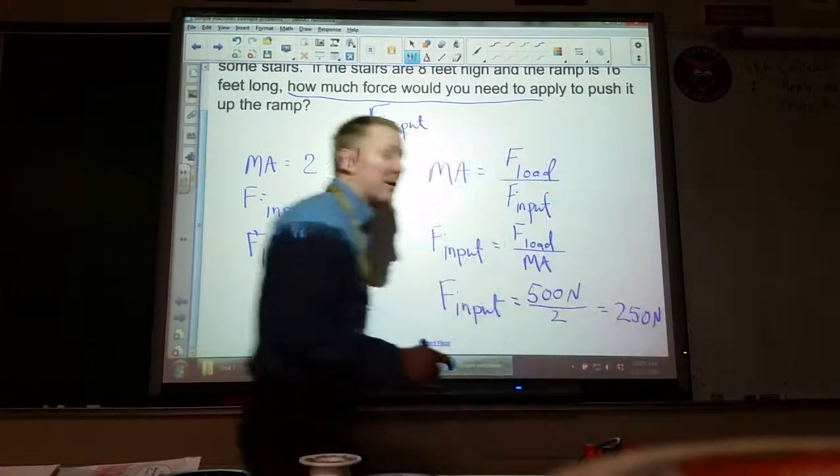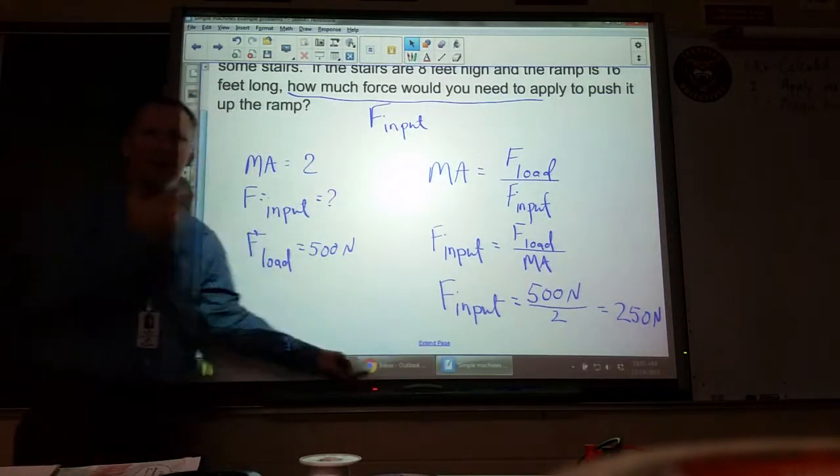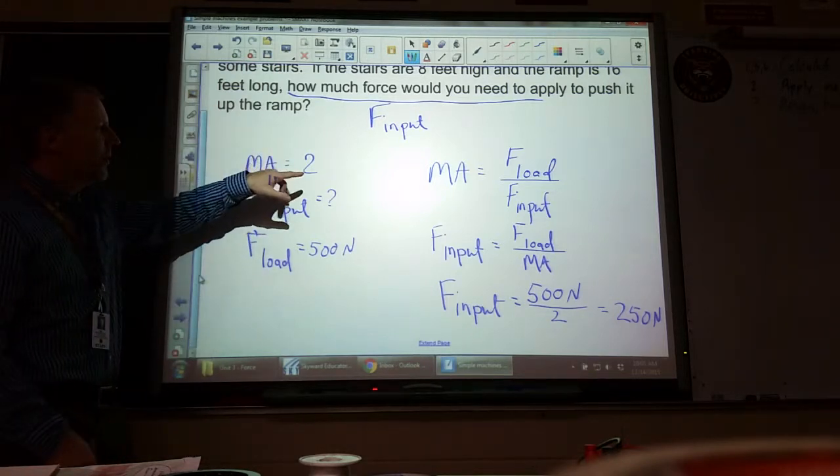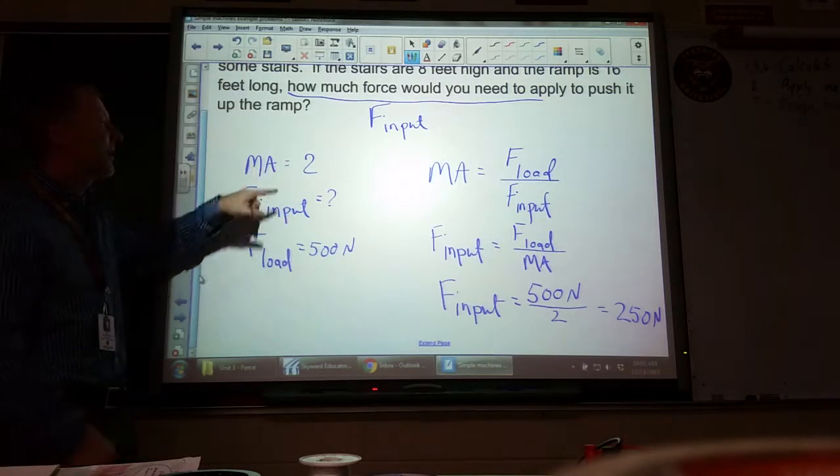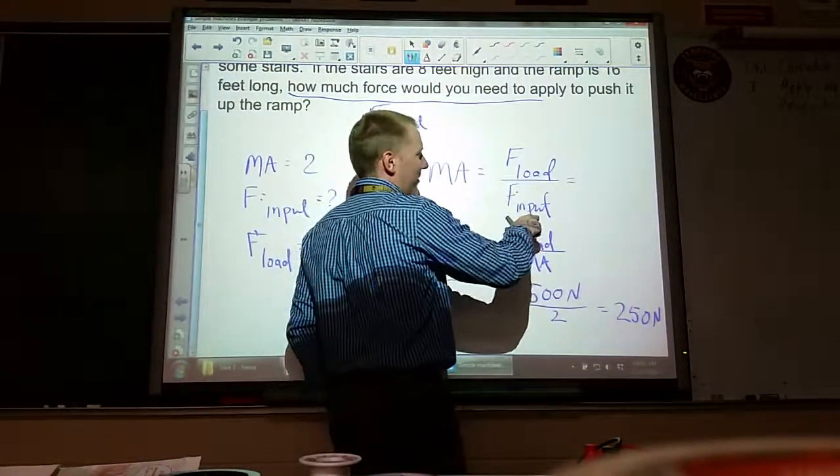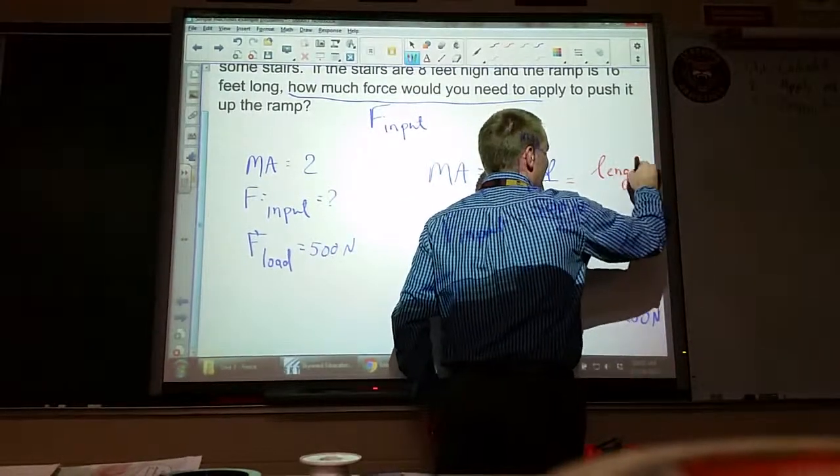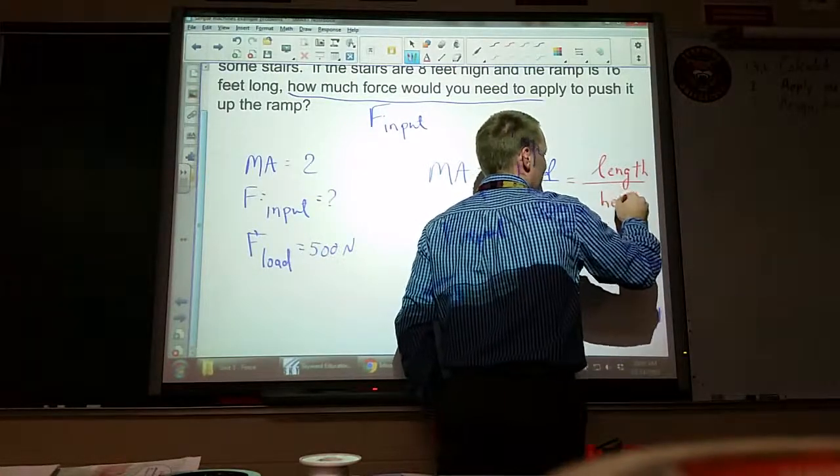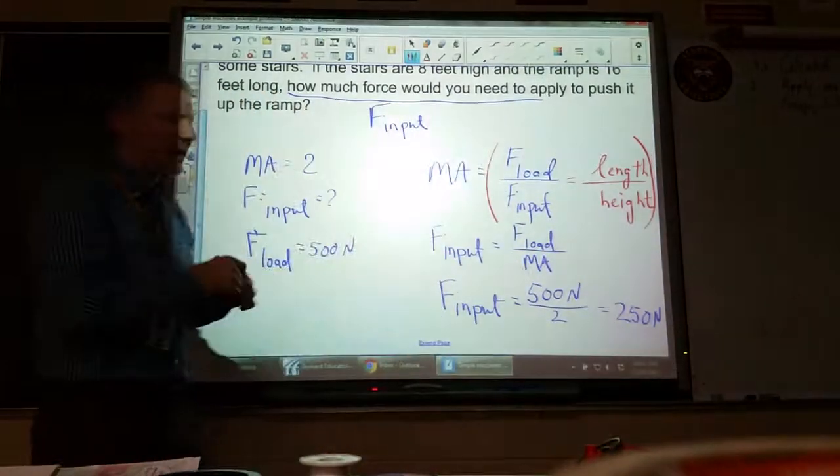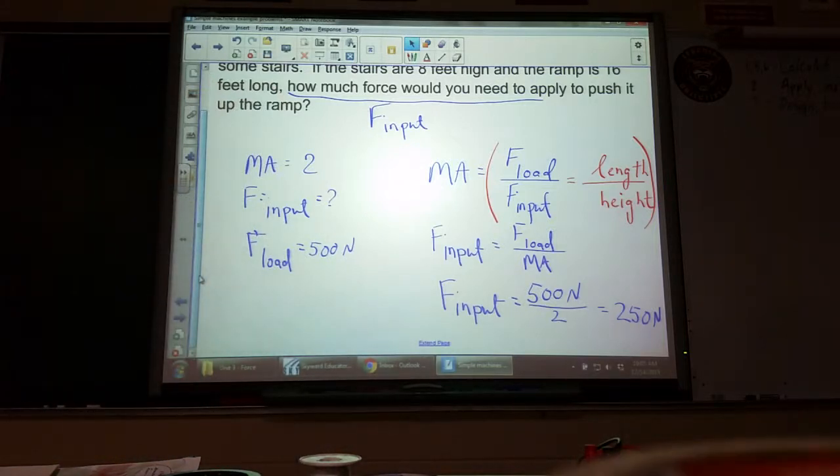We could also, if we hadn't done the previous problem, have done them in one step. So this is very much like the one we started the hour on. We can find the mechanical advantage first like we did in the previous step and then put it in here, but we could also say that one way to find mechanical advantage is F_load over F_input, but this is an inclined plane, so we can also say that it's equal to the length over the height. Use this part, cross multiply and solve it that way. Whichever way your preference is. From now we've got the homework.